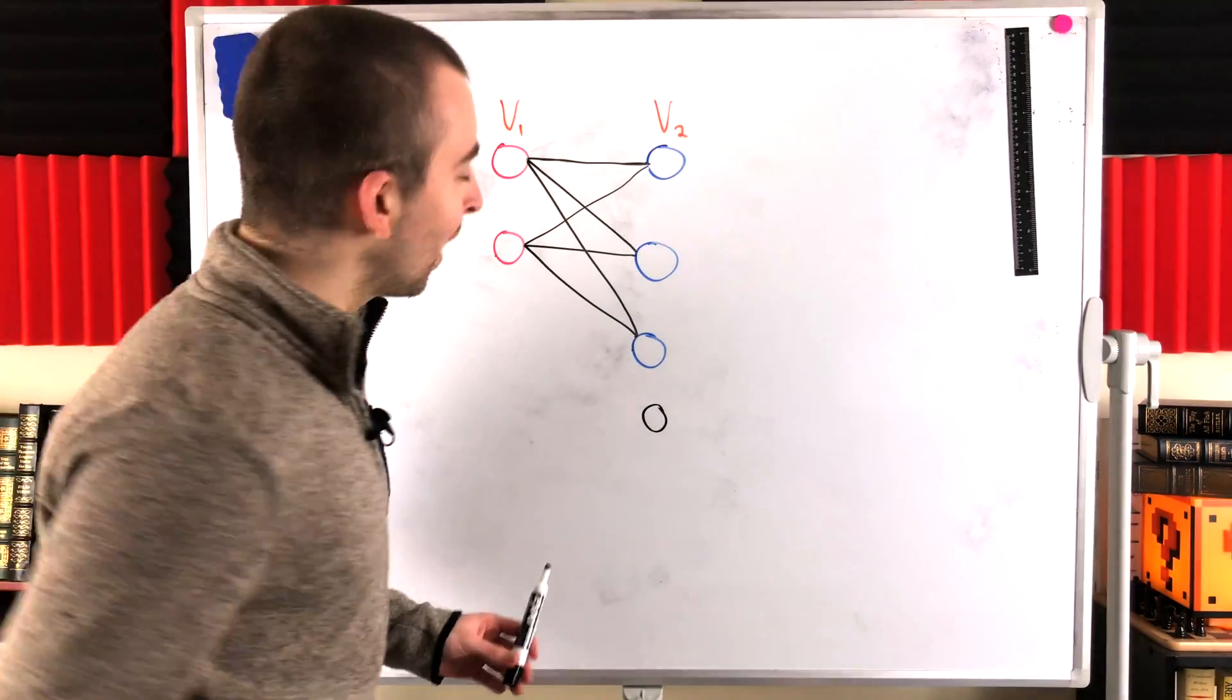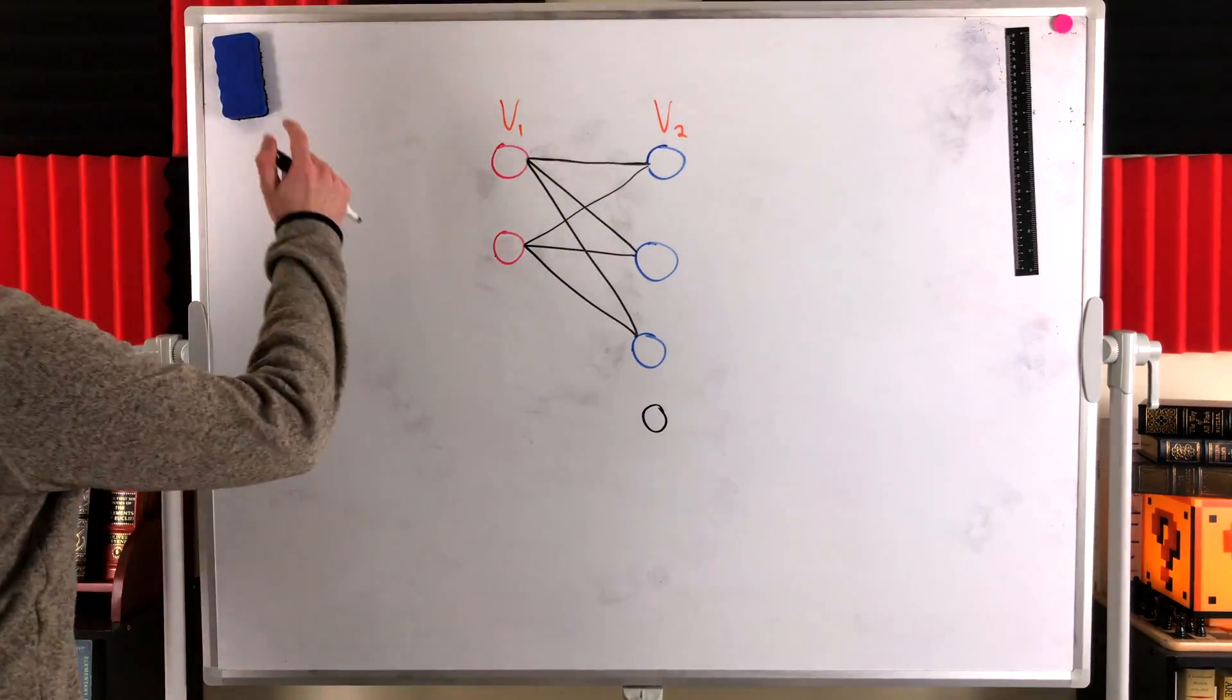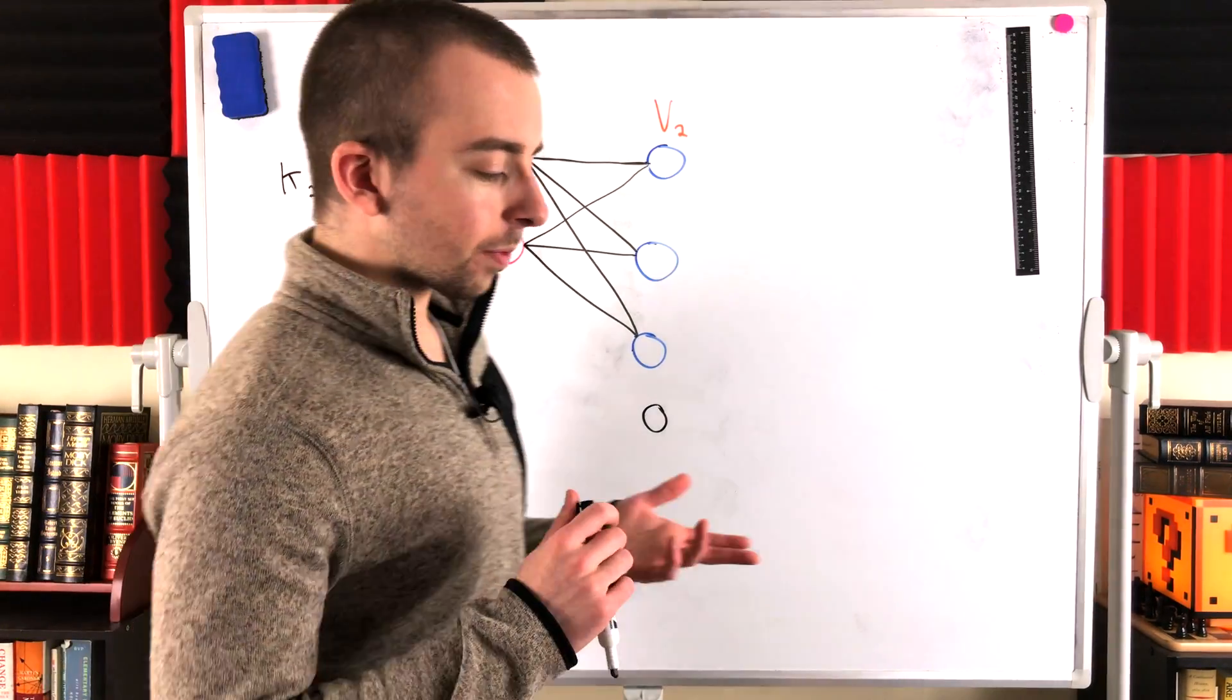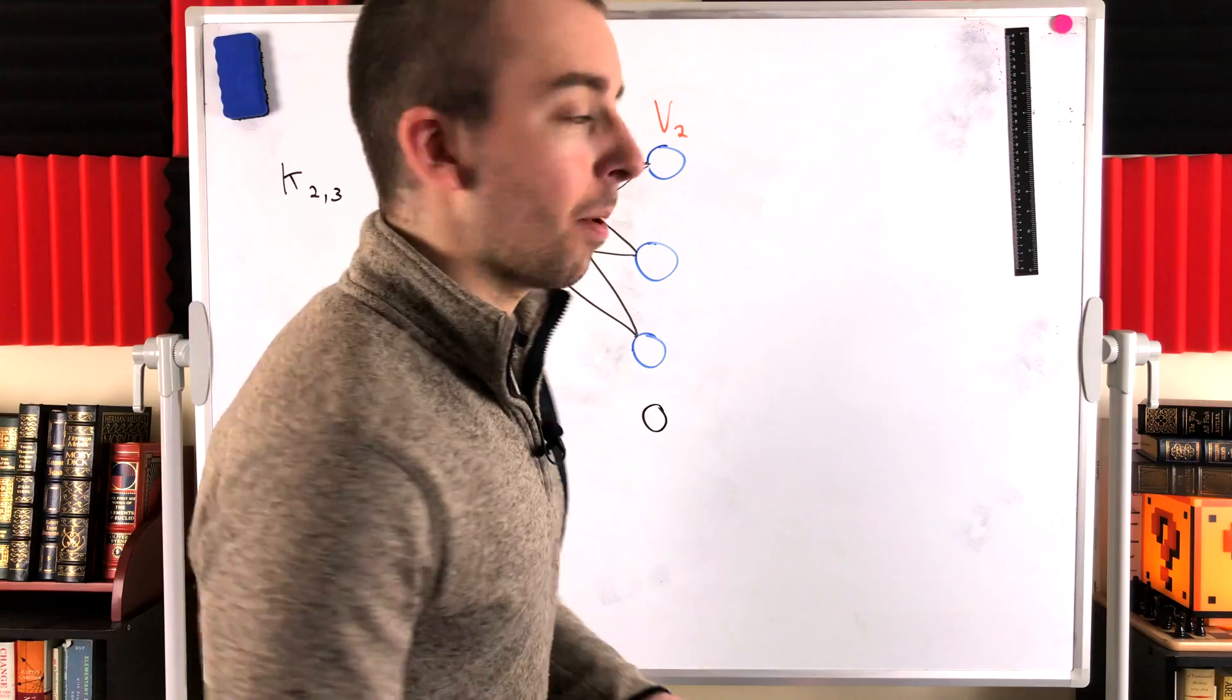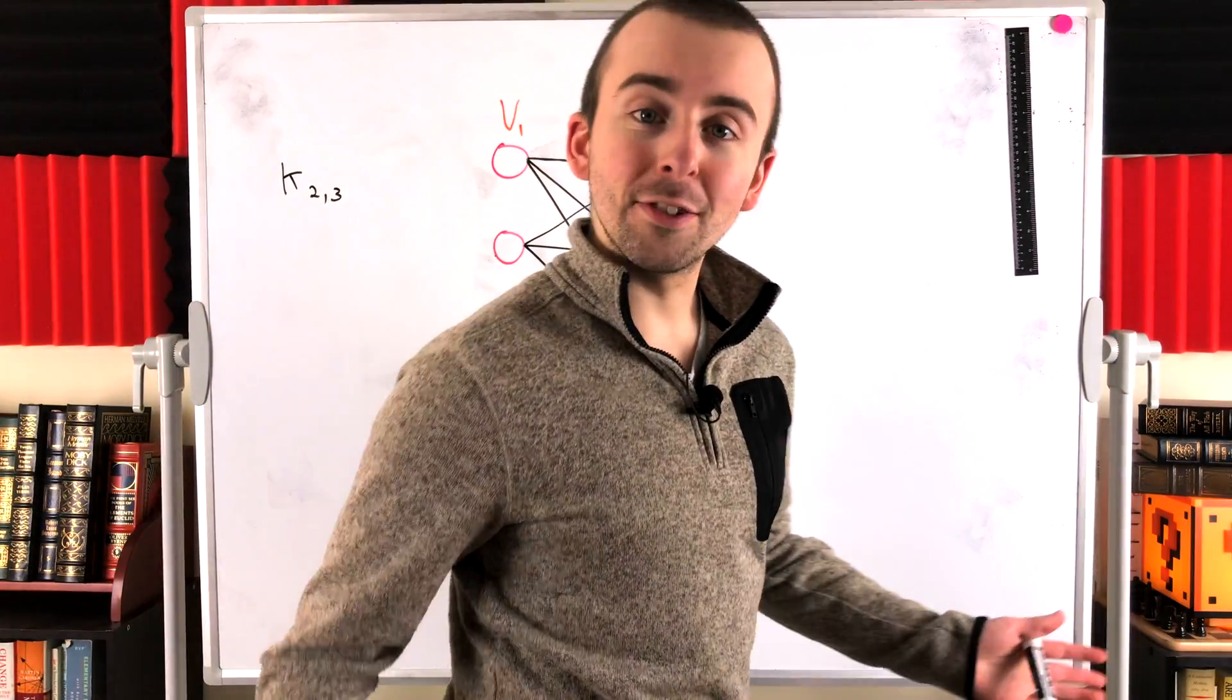It's not. If we've got edges already, we can't add an isolated vertex to a complete bipartite graph and still have a complete bipartite graph.